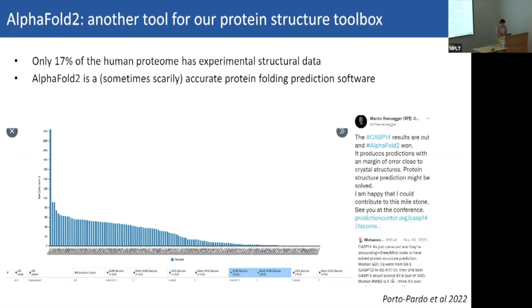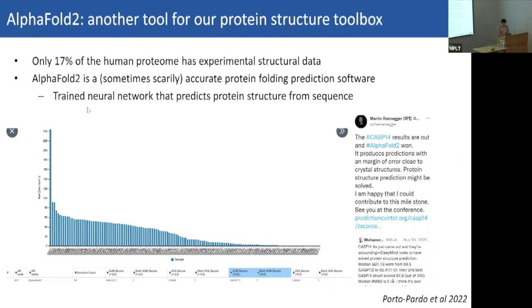I would describe AlphaFold as a sometimes scarily accurate protein folding prediction software. It's important to note that it's predicting the structure of proteins, not predicting how proteins fold along their pathway — that's not really tackled by AlphaFold. Under the hood, it's a trained neural network that predicts protein structure from sequence, and it does a really good job on monomers, with a reasonable job on protein complexes.